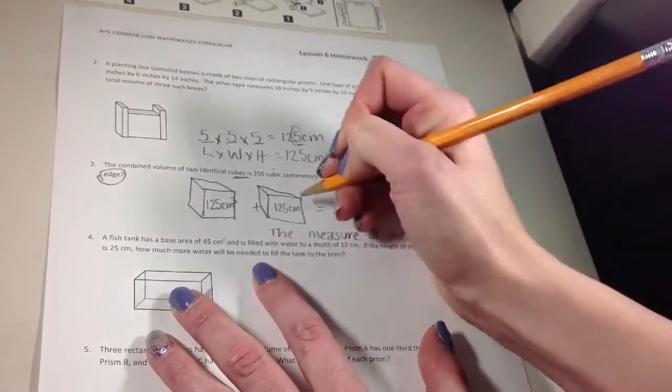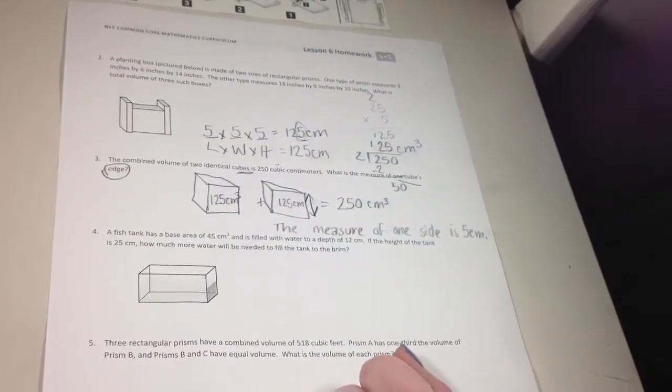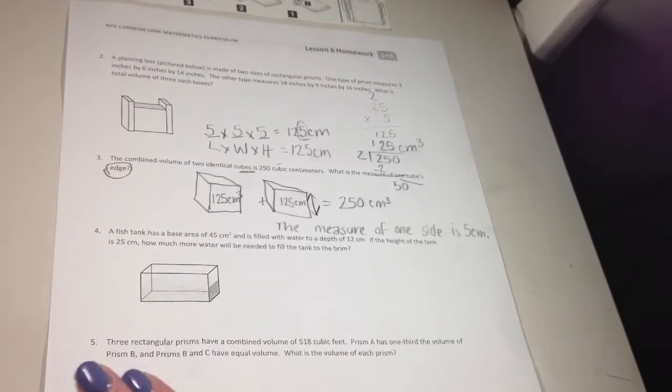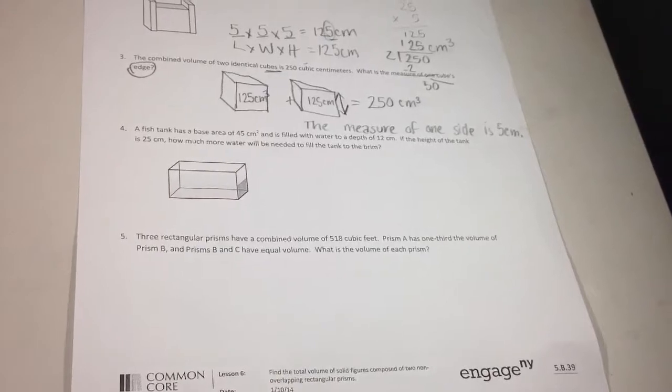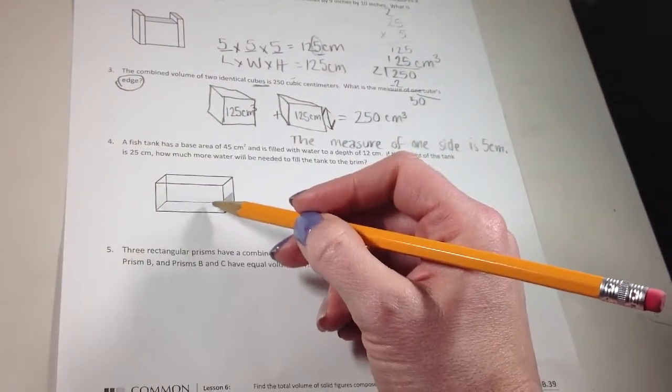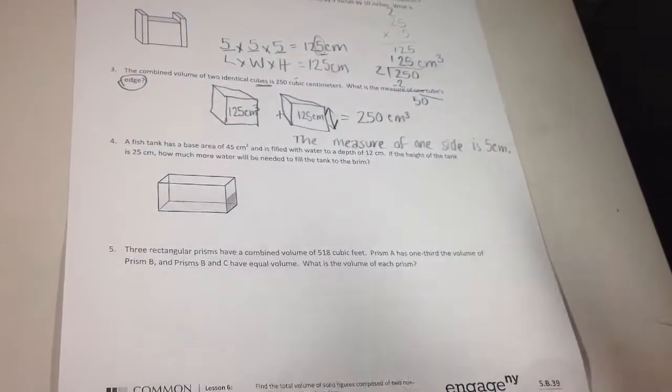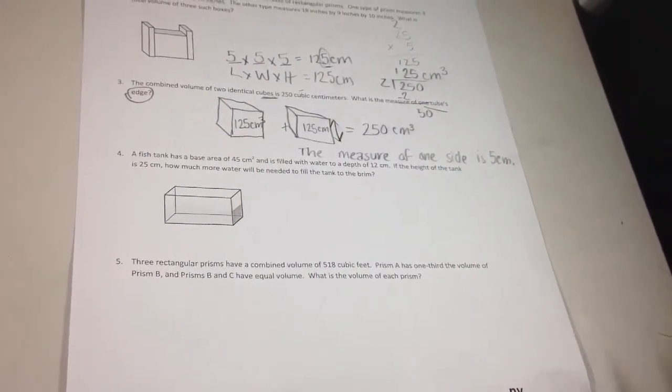And you wouldn't cube it because, remember, I'm just talking about a linear measurement of one side. There's only one measurement there. This one is talking about a fish tank. This is kind of similar to what we did today. However, it's talking about the water level. So I'm picturing, like, one cube being the water level and another cube being the empty space.